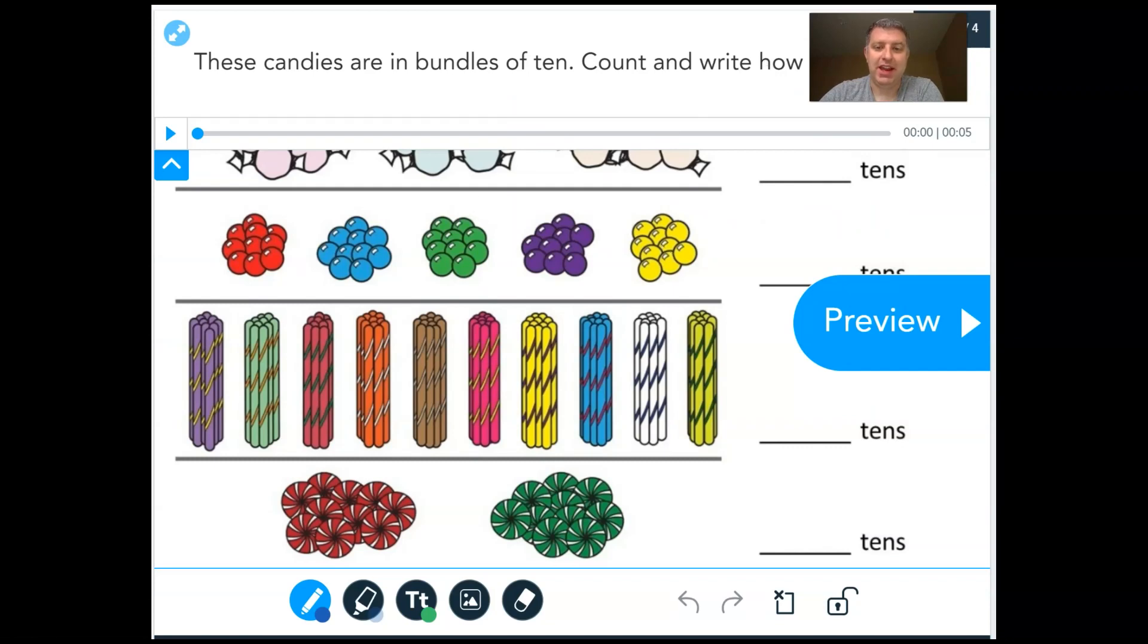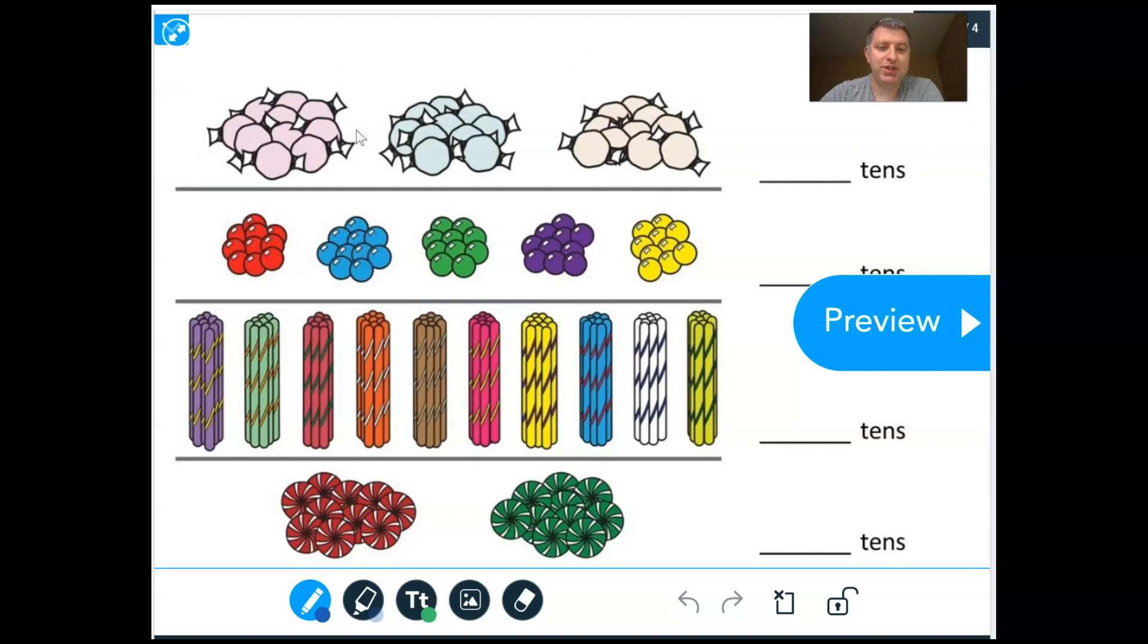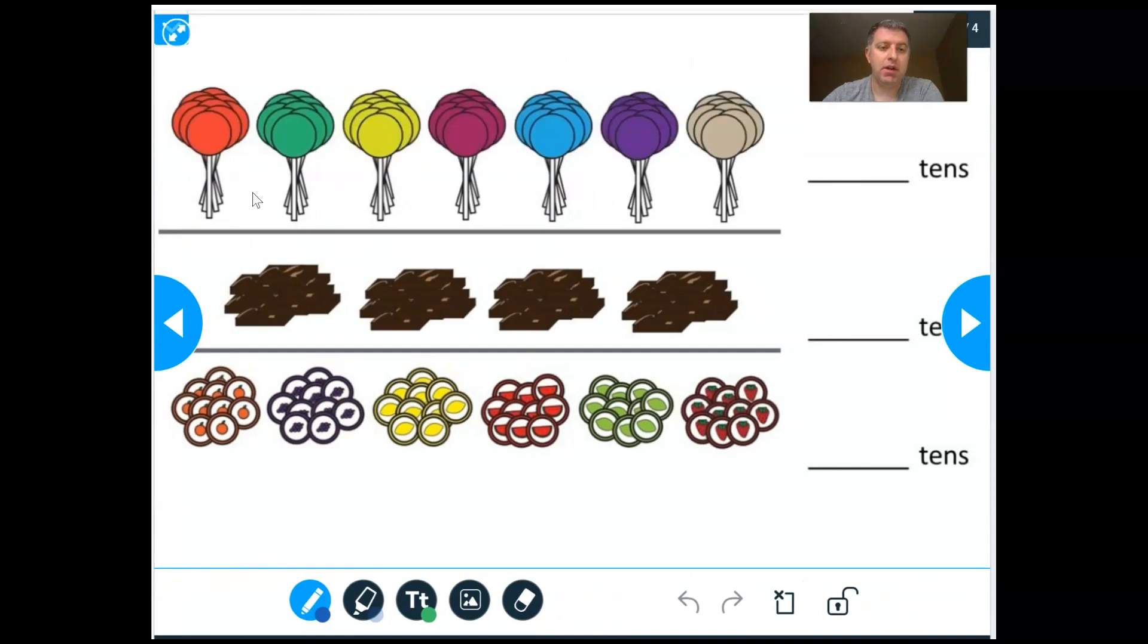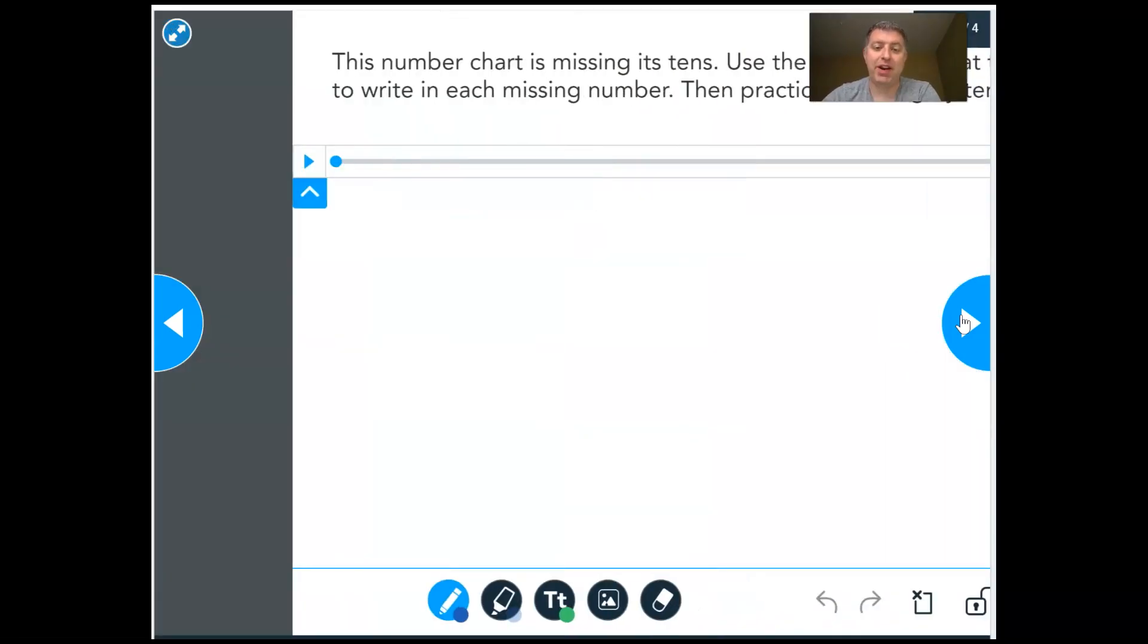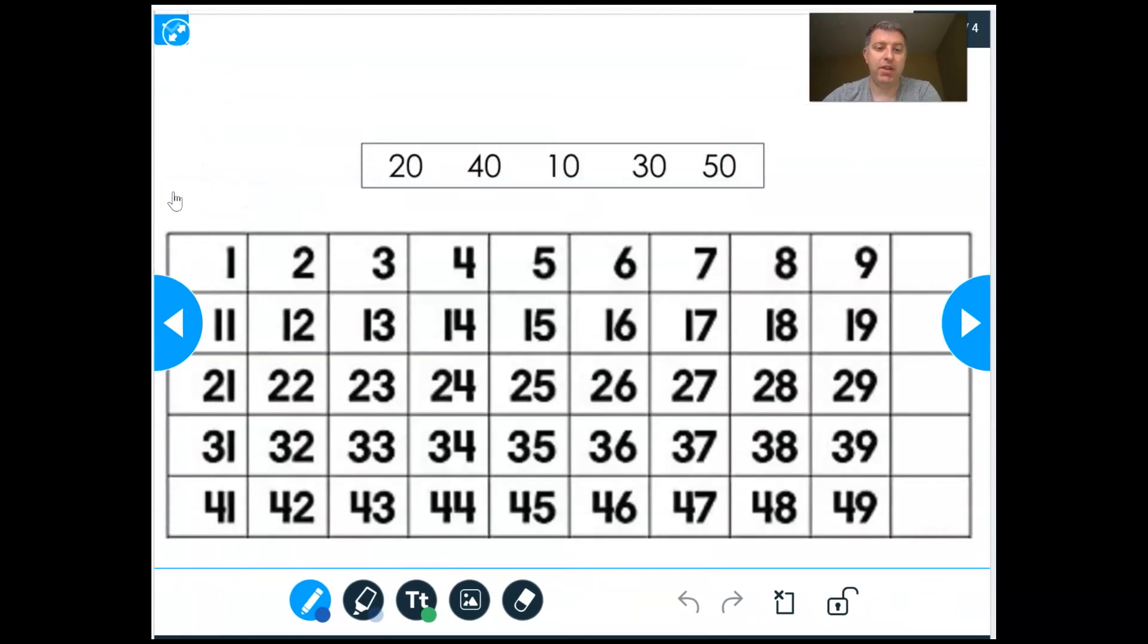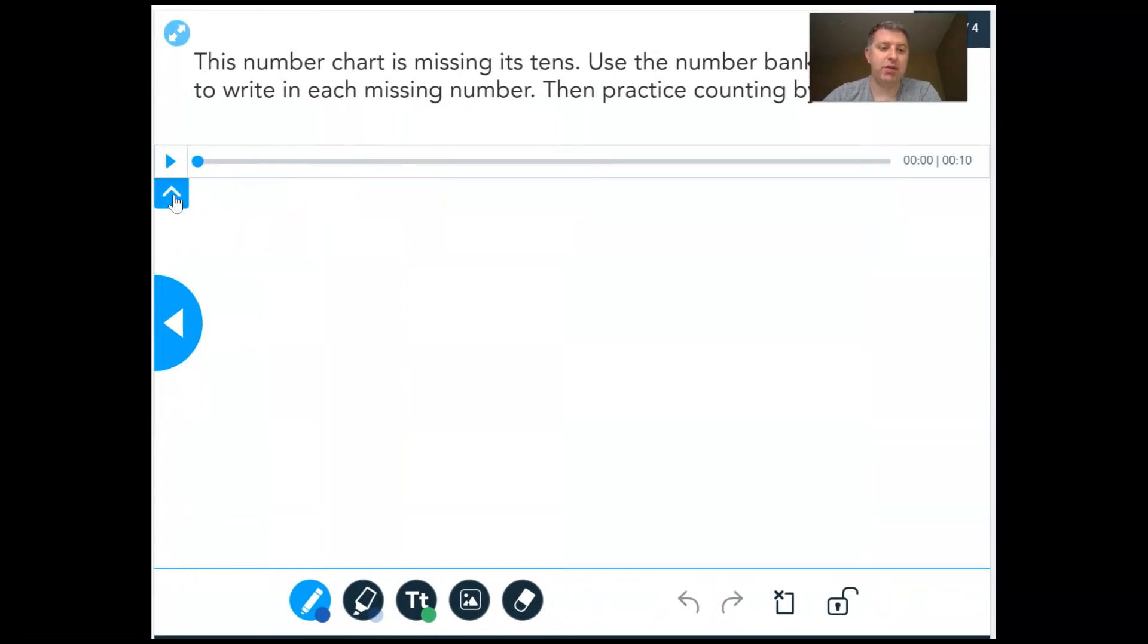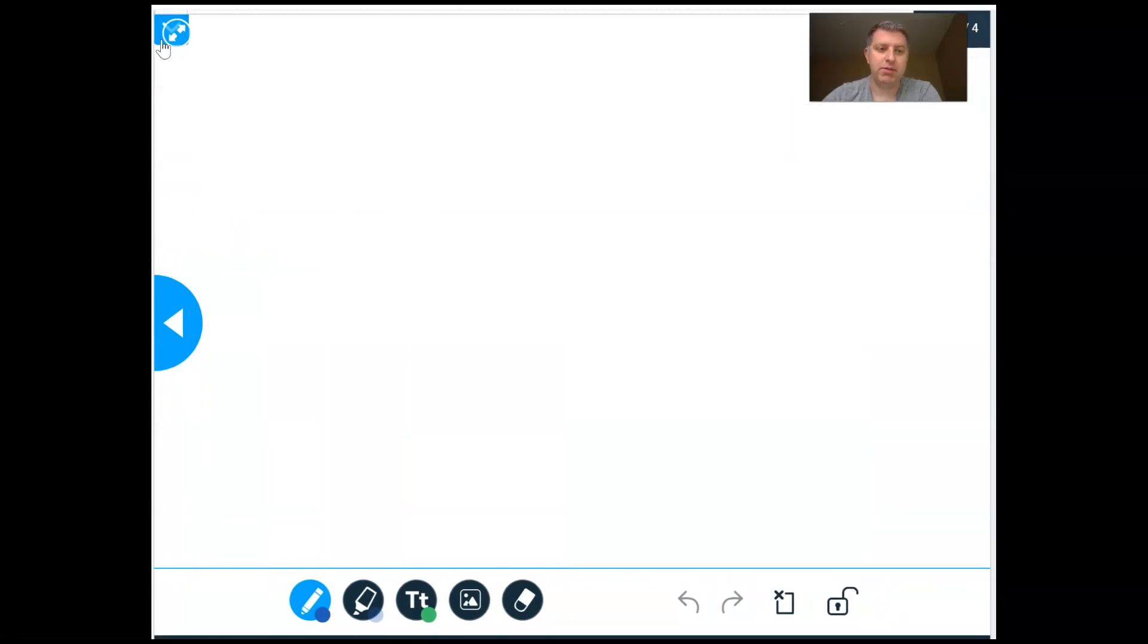All right, friends. And here is what you're going to be doing. These bundles of candies are in groups of 10. All you have to do is count how many groups of 10 you see and write how many tens there are. You can do that again over here. Count each bundle of 10 and tell me how many tens there are. You don't have to tell me 40 or 50. You could just tell me five groups of 10 or four groups of 10 and so on. And then we have a number chart where the tens are missing. You can use this bank up here to write in the missing tens and then practice counting by tens.